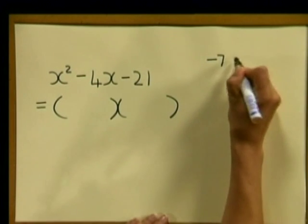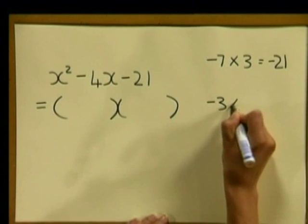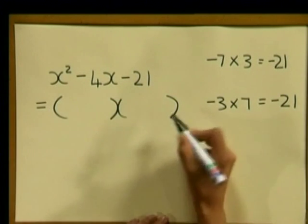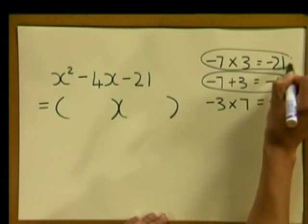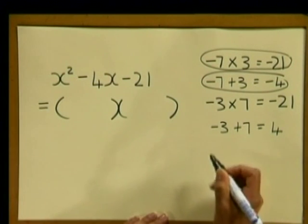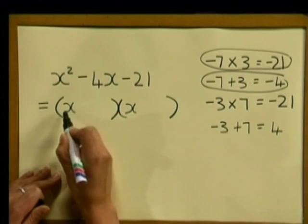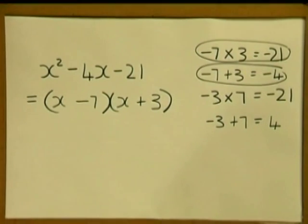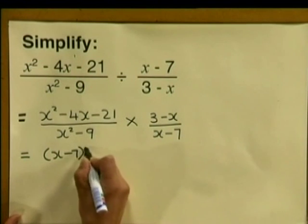Let's think of the factors. We start with minus 7 multiplied by positive 3 because that gives us minus 21. We could also have minus 3 multiplied by 7, which also gives minus 21. But let's check which pair adds to minus 4. Minus 7 plus 3 gives us minus 4 — that's the correct option. Minus 3 plus 7 gives positive 4, which we don't want. So we write minus 7 and positive 3. We first write X in each bracket, then our minus 7 and plus 3, giving us the factors X minus 7 and X plus 3.